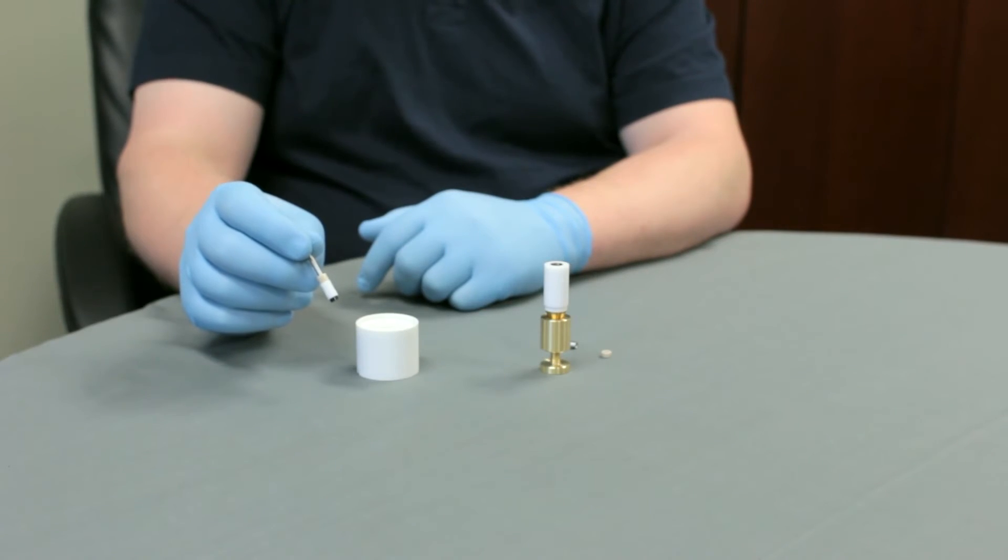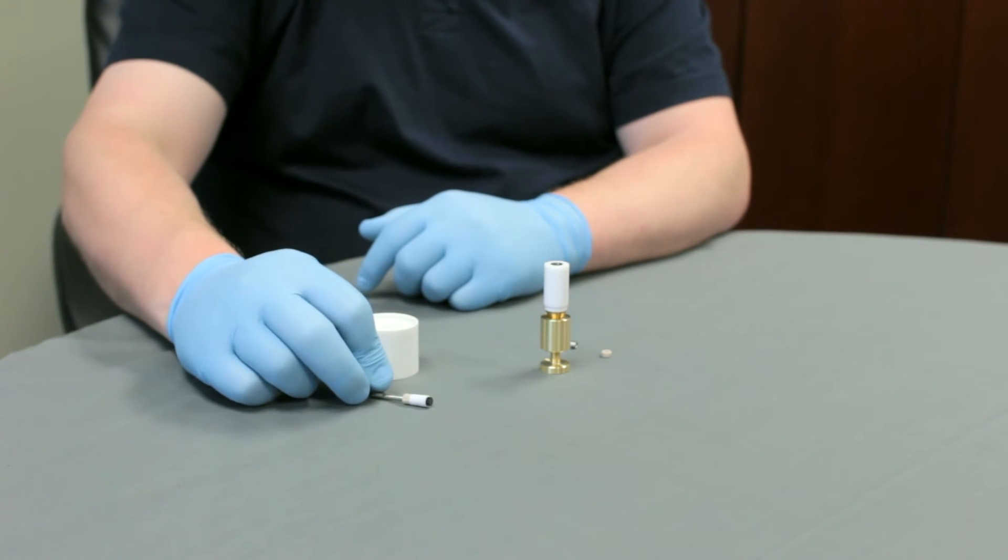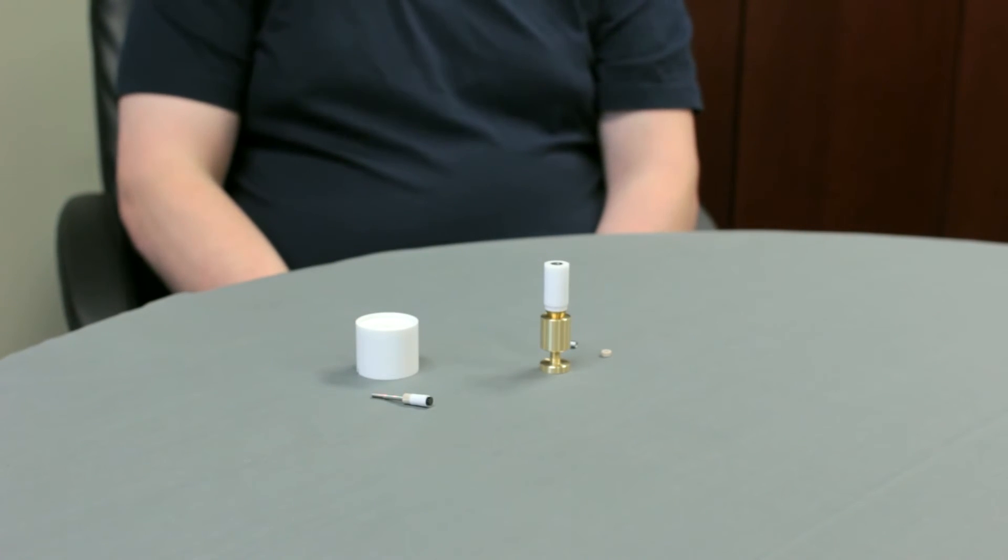If the disk insert falls out, then you need to replace the U-cup. Make sure that the disk insert can be picked up without fail using the new U-cup assembly.